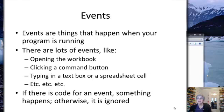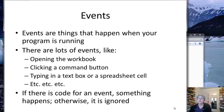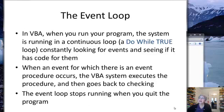What happens in your program is if you've written code to deal with an event, then that code gets executed when the event occurs. And if you haven't, VBA just ignores the event. But the question here is, how does it pick up on when an event happens? And a nice way to think about it is as an event loop.